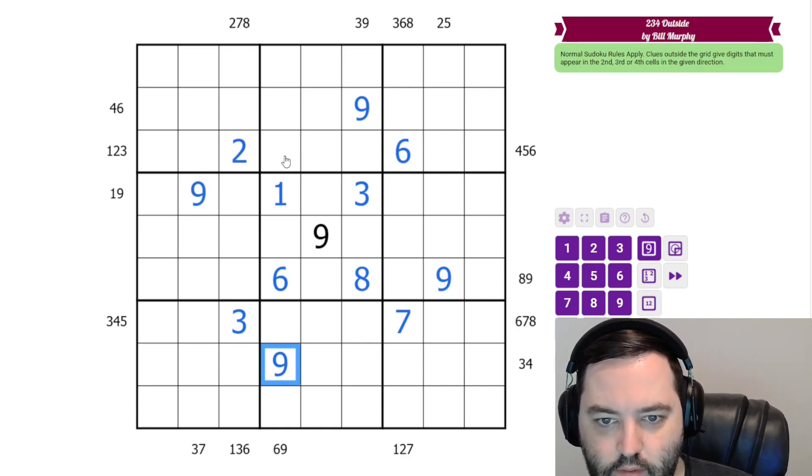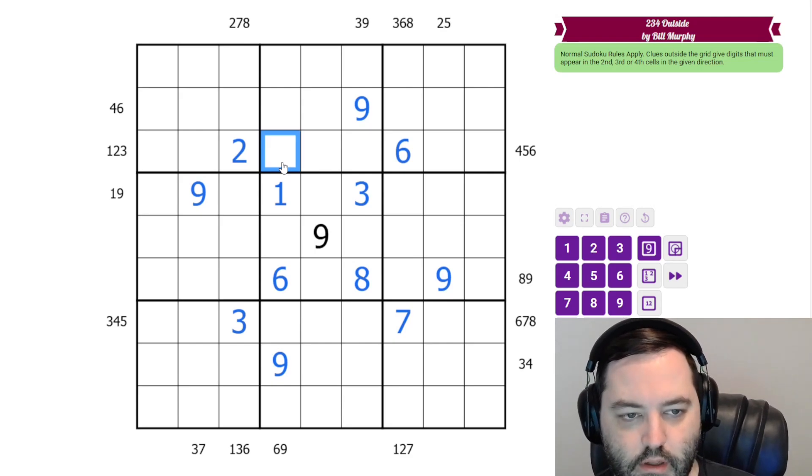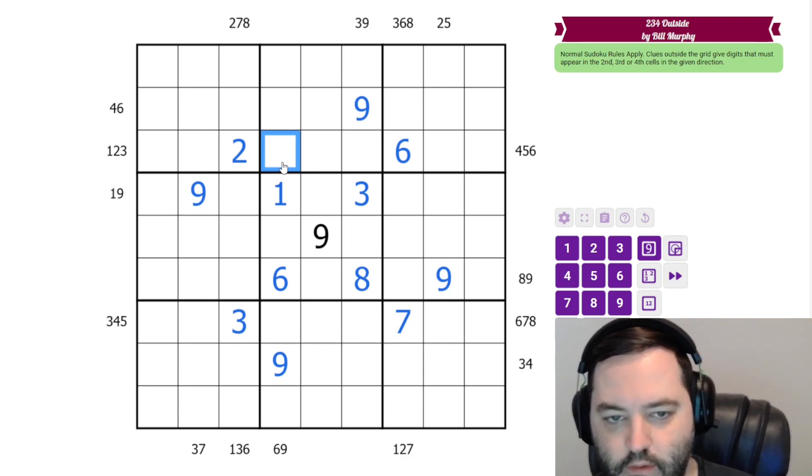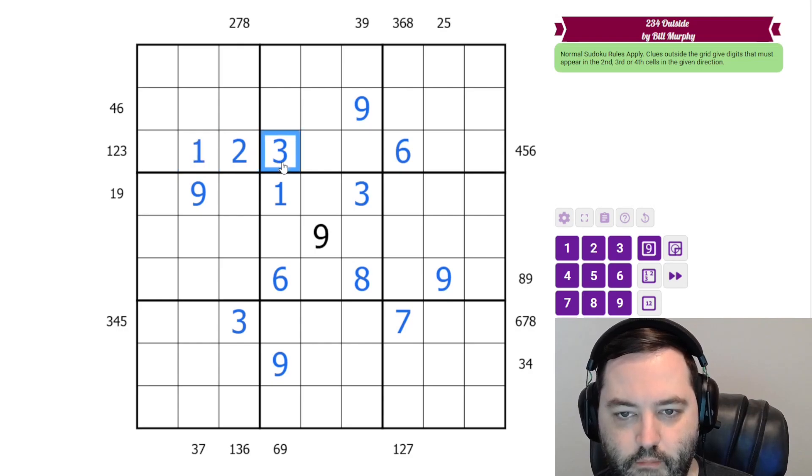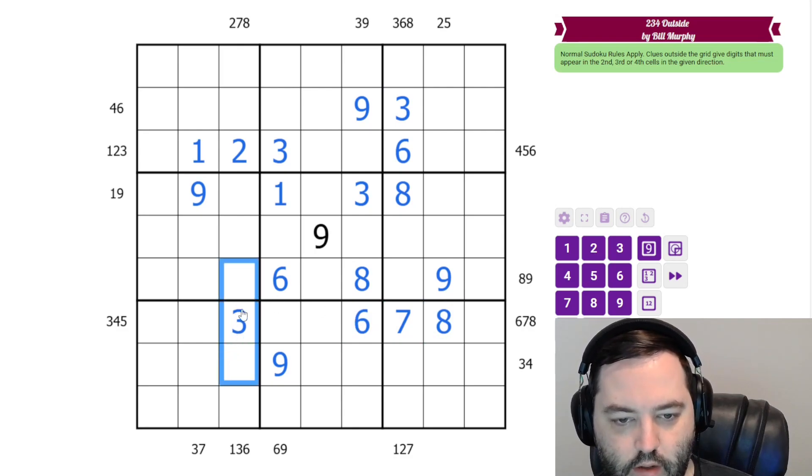We can resolve some of these pairs that we haven't completed yet. So we had 1, 2, 3 here. This can't be a 1, so this is 3. We had 3, 6, 8 here. The 3 can't go here, so they go like that. Here we have 6, 7, and 8. So this is 6 and this is 8. And here we had 1, 3, 6. So this is 1 and this is 6.